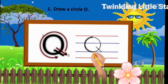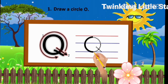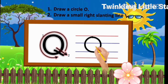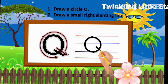Step 1: Draw a circle. Step 2: Draw a small right slanting line.